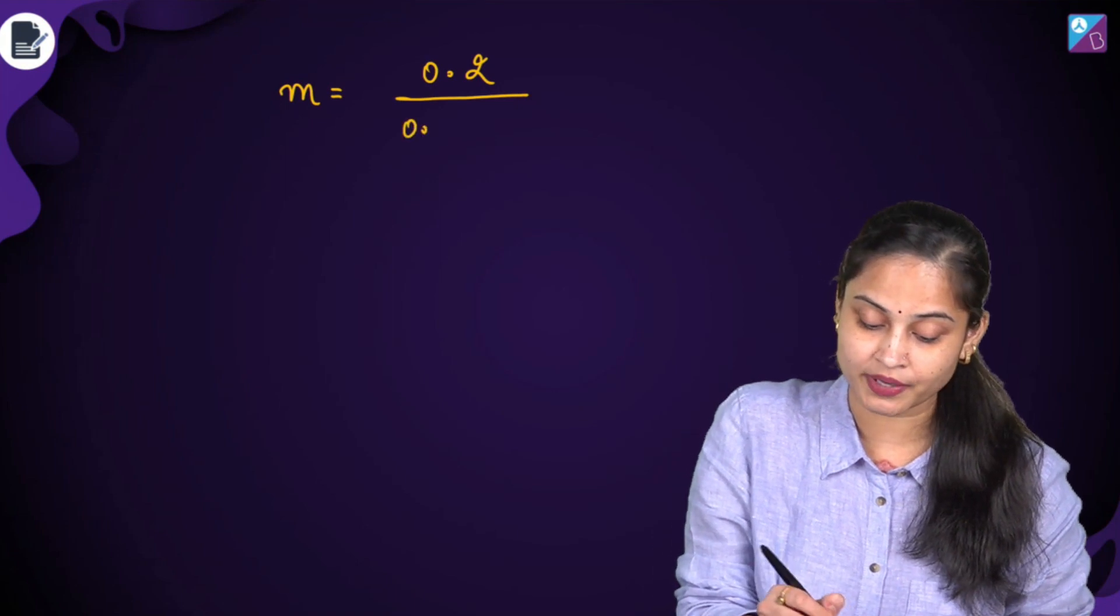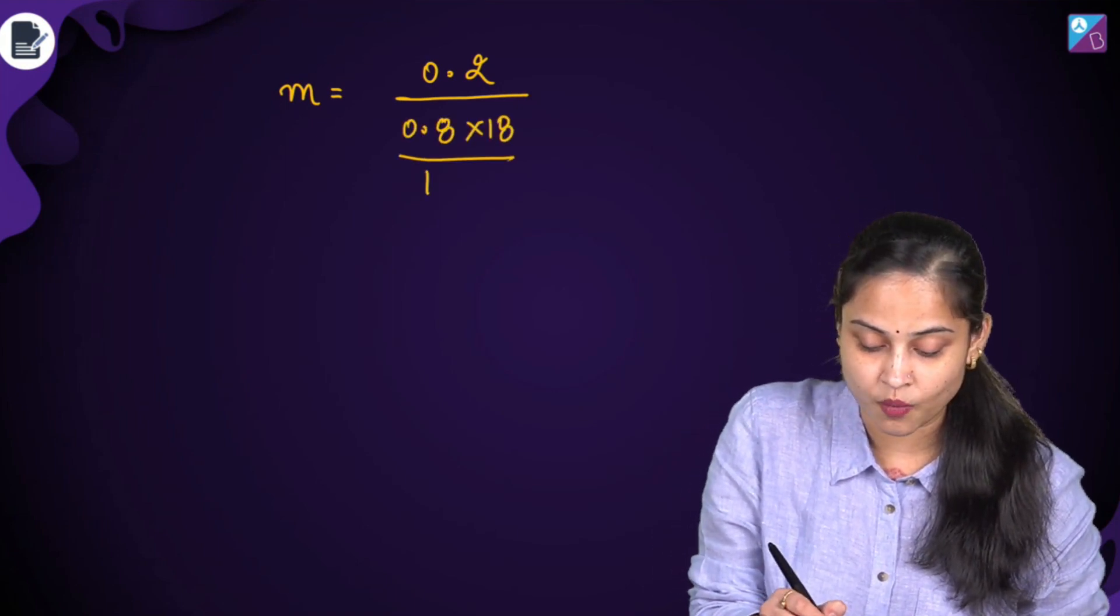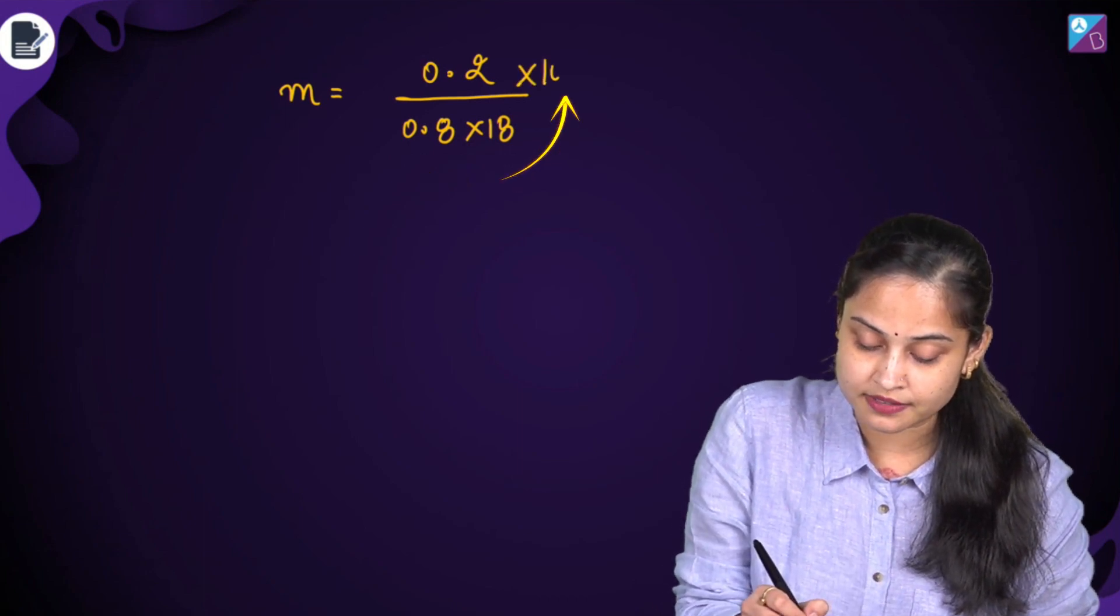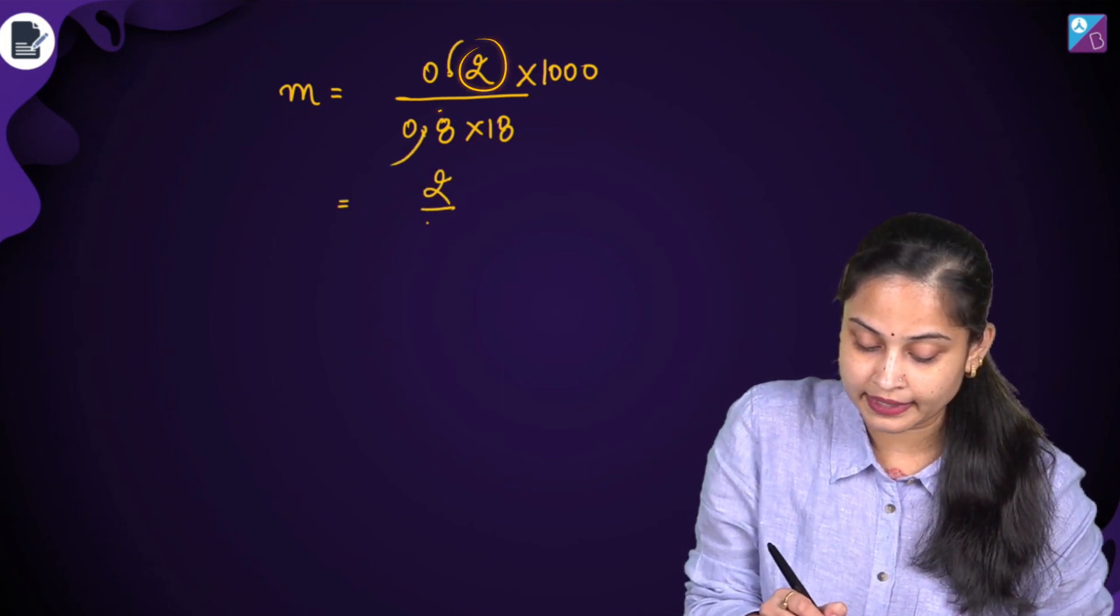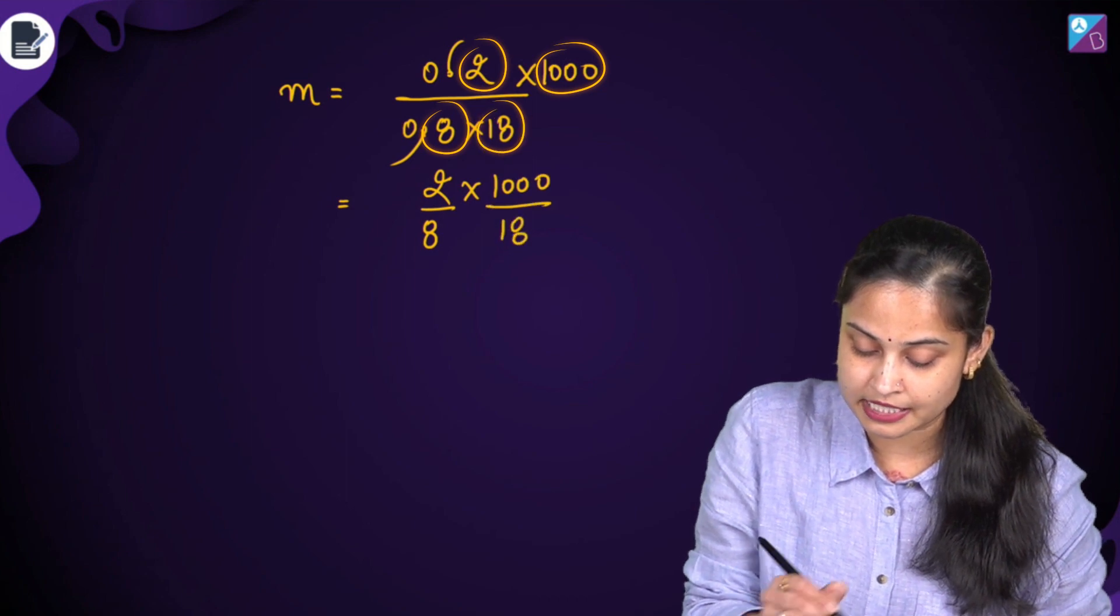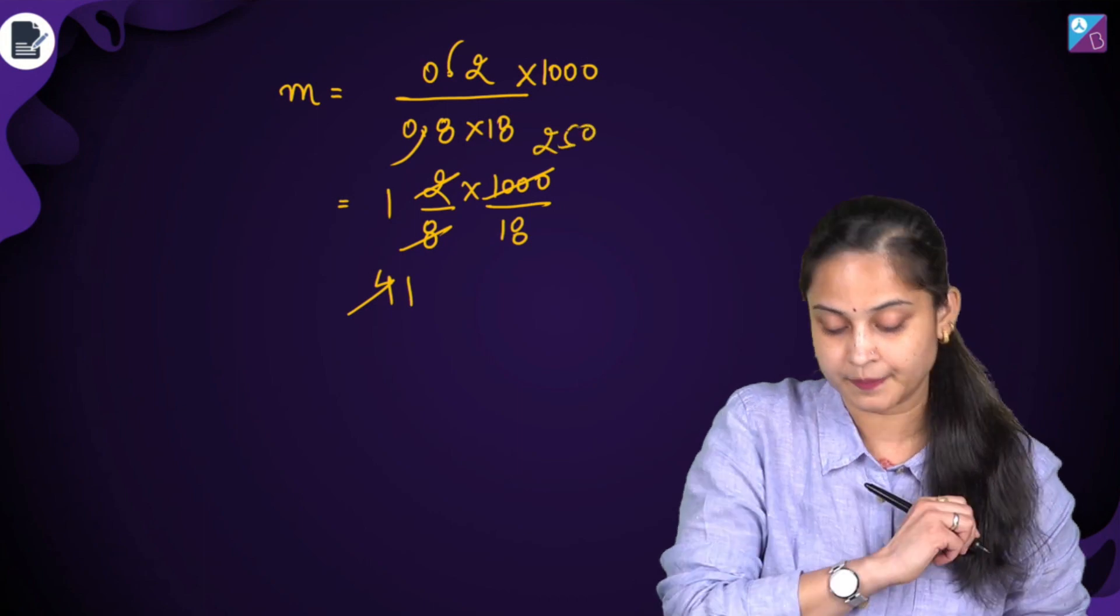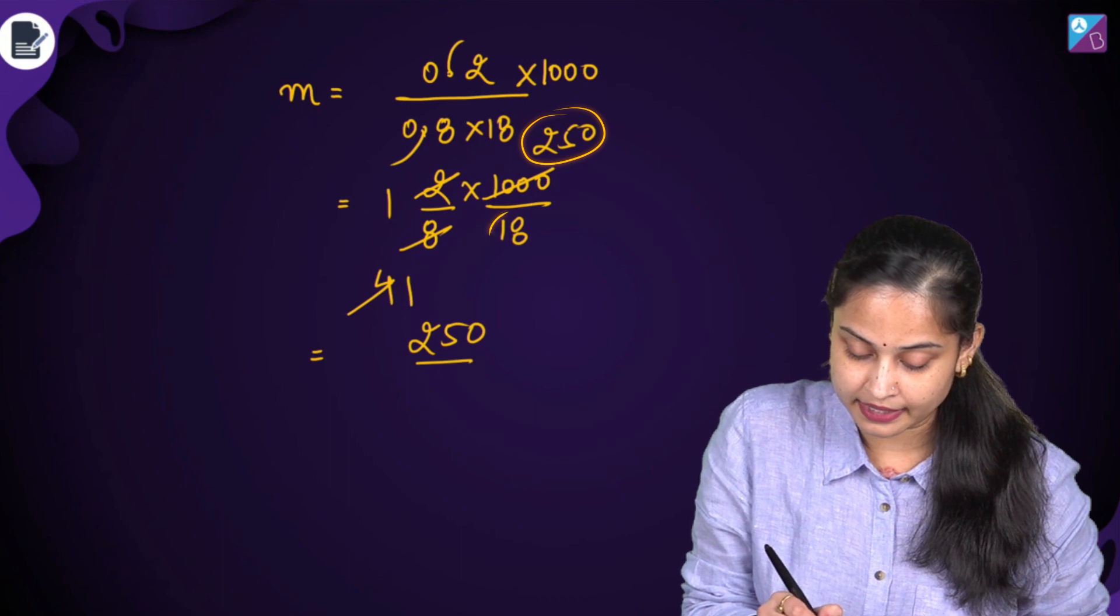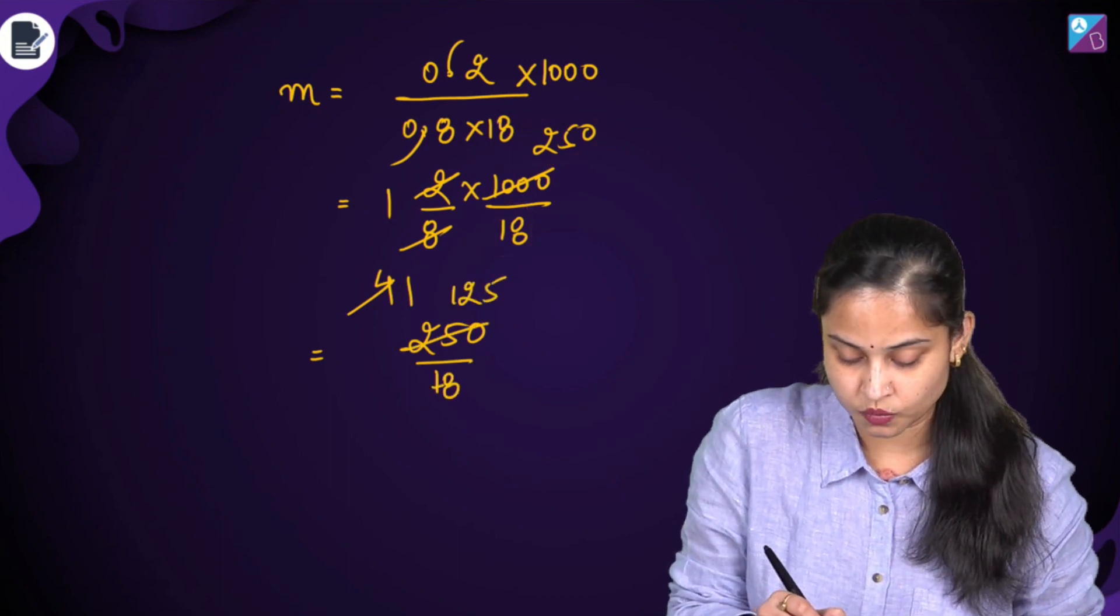So what's the mass of solvent? It's 0.8 multiplied by 18 divided by 1000. So this 1000 will go up in the numerator. Solve it. Decimal cancels out with this decimal. So it's 0.2 divided by 0.8 into 18 times 1000. It's 2 times 1000 divided by 8 times 18, which is 2000 divided by 144. So it becomes 250 by 18.